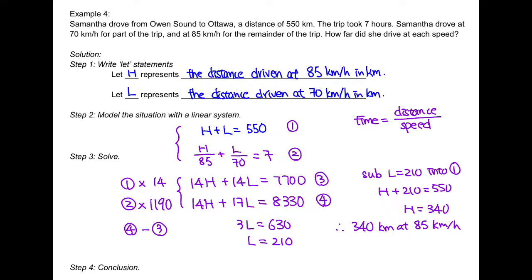Therefore, Samantha drove 340 kilometers at 85 kilometers per hour and 210 kilometers at 70 kilometers per hour.